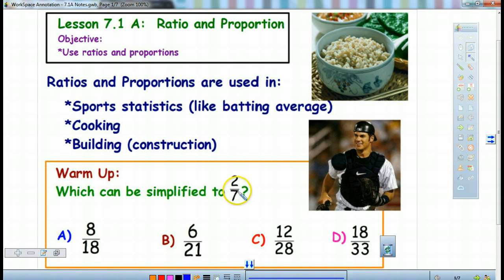So 2/7, which one is equivalent to that? Well, 8/18, if we divide both the top and the bottom by 2, we get 4/9. So that one doesn't work. If we go 6/21, we can divide them both by 3. If we do that, we get 2/7. That one matches. We don't even have to move on because we know that B is our answer.